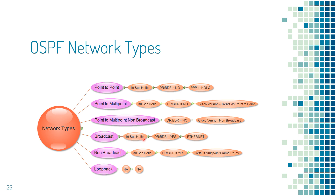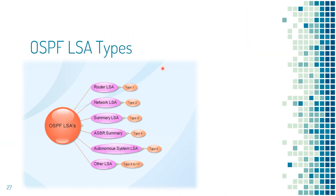For broadcast network types, OSPF hello packets are sent every 10 seconds with a dead interval of 40 seconds. Ethernet interfaces are considered broadcast and there will be DR and BDR elections. For non-broadcast network types, OSPF hello packets are sent every 30 seconds with a dead interval of 120 seconds. Multi-point Frame Relay interfaces are considered non-broadcast and there will be DR and BDR elections.